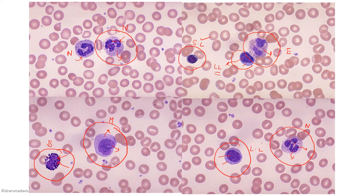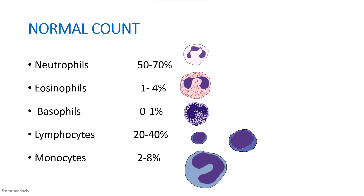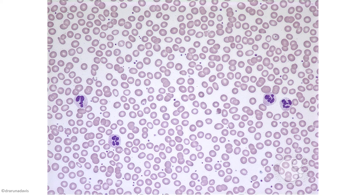When making a smear, you will not see all WBCs equally because proportions differ. Neutrophils are most common at 50–70%, followed by lymphocytes at 20–40%, monocytes at 2–8%, eosinophils at 1–4%, and basophils at just 0–1%, making basophils the most difficult to identify. Your smear will therefore show mostly neutrophils. The tiny purplish dots visible in the smear are platelets.